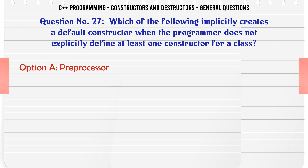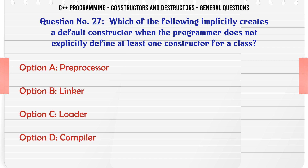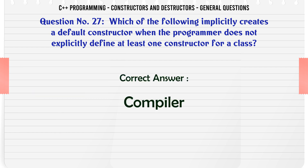Which of the following implicitly creates a default constructor when the programmer does not explicitly define at least one constructor for a class? A. A preprocessor. B. Linker. C. Loader. D. Compiler. The correct answer is Compiler.